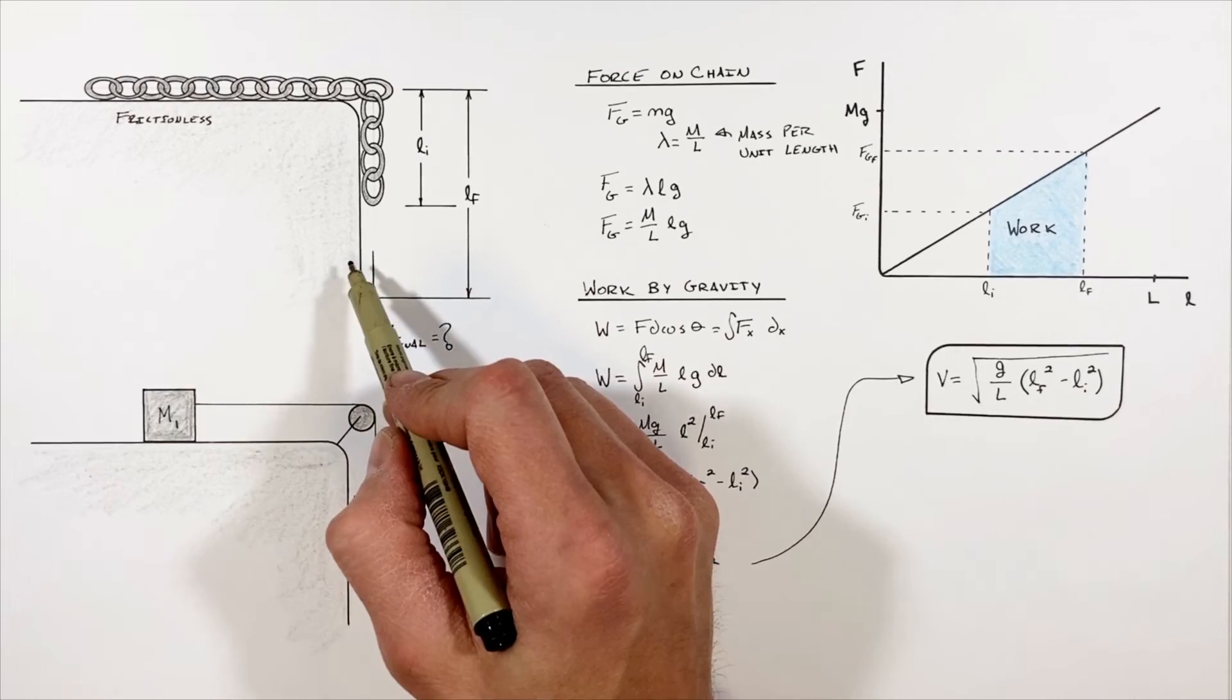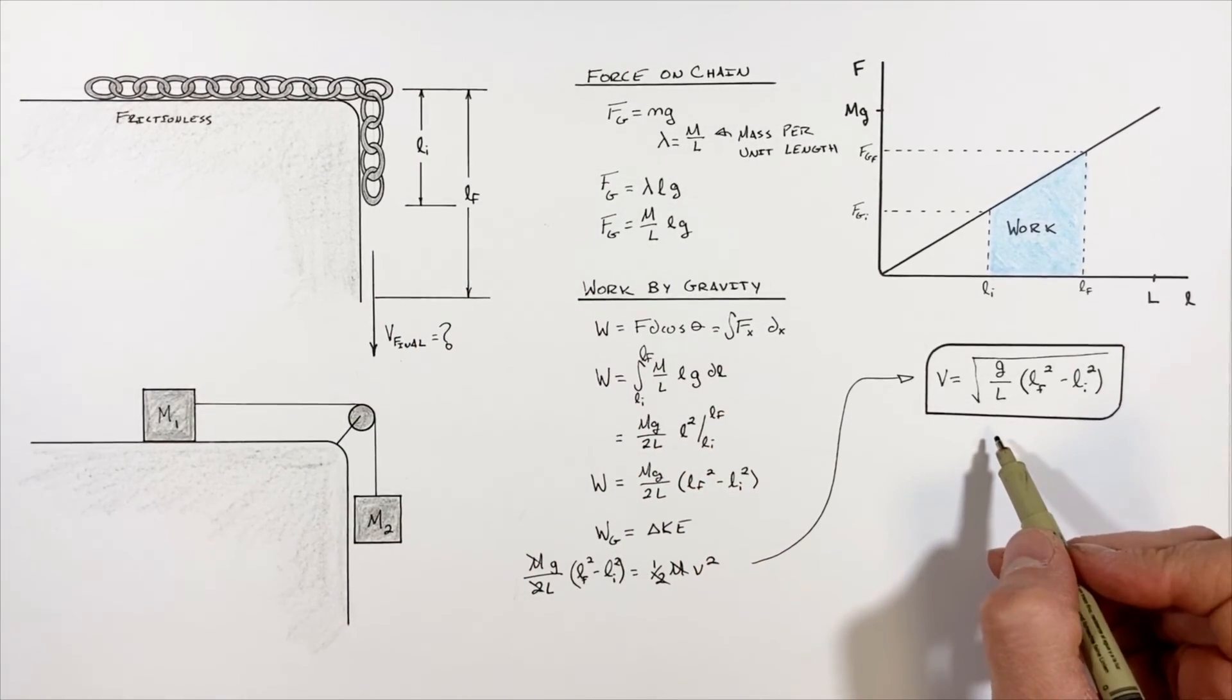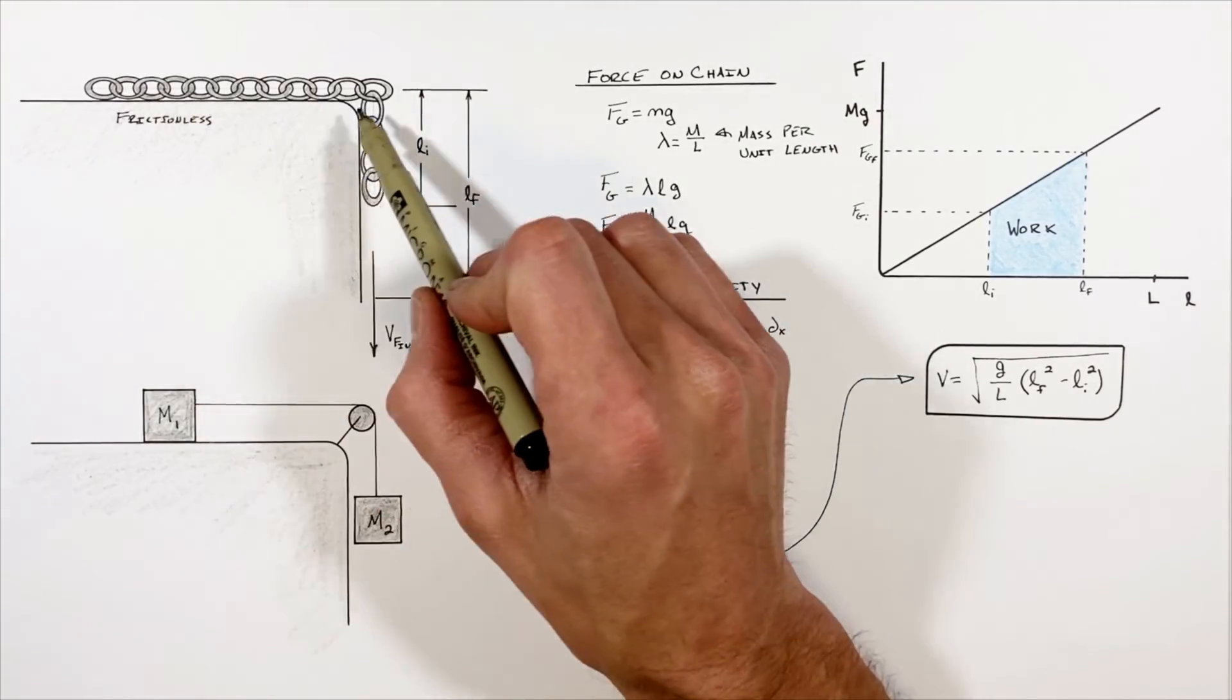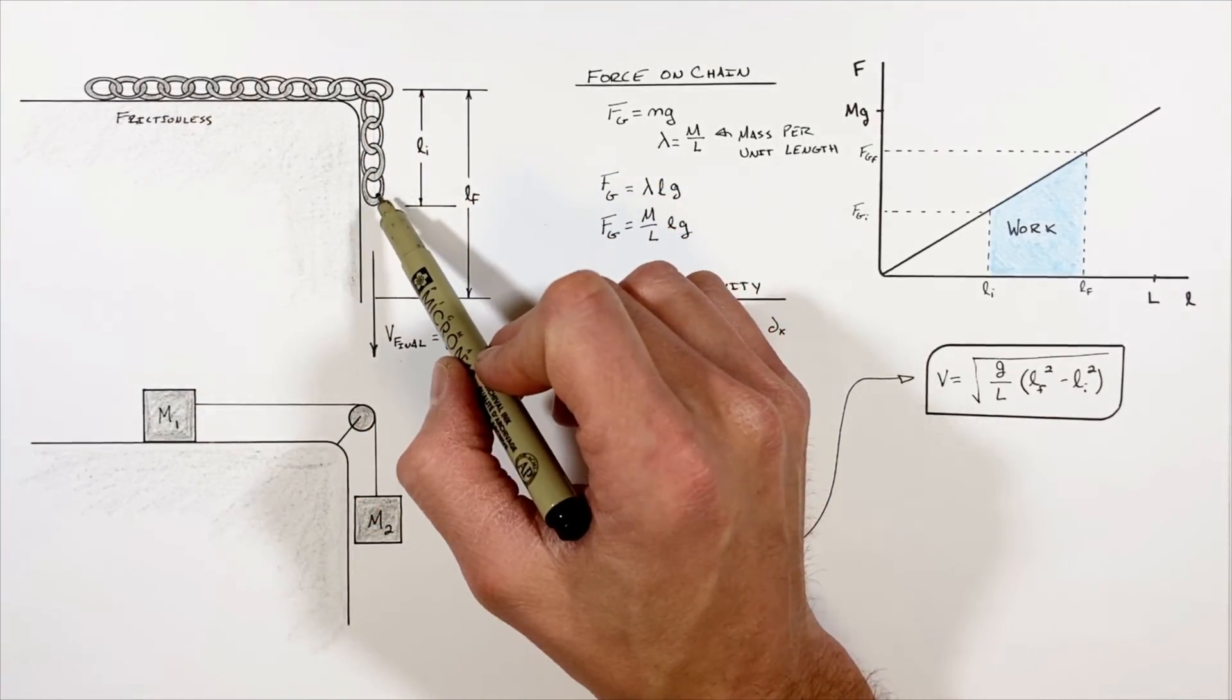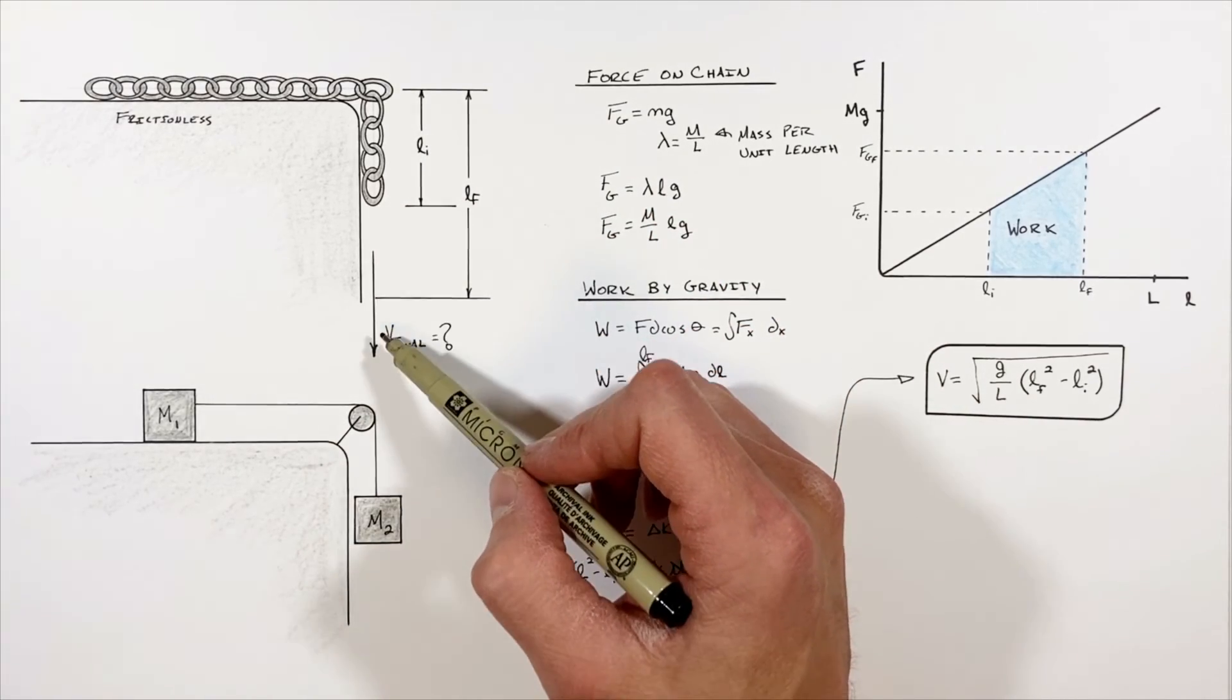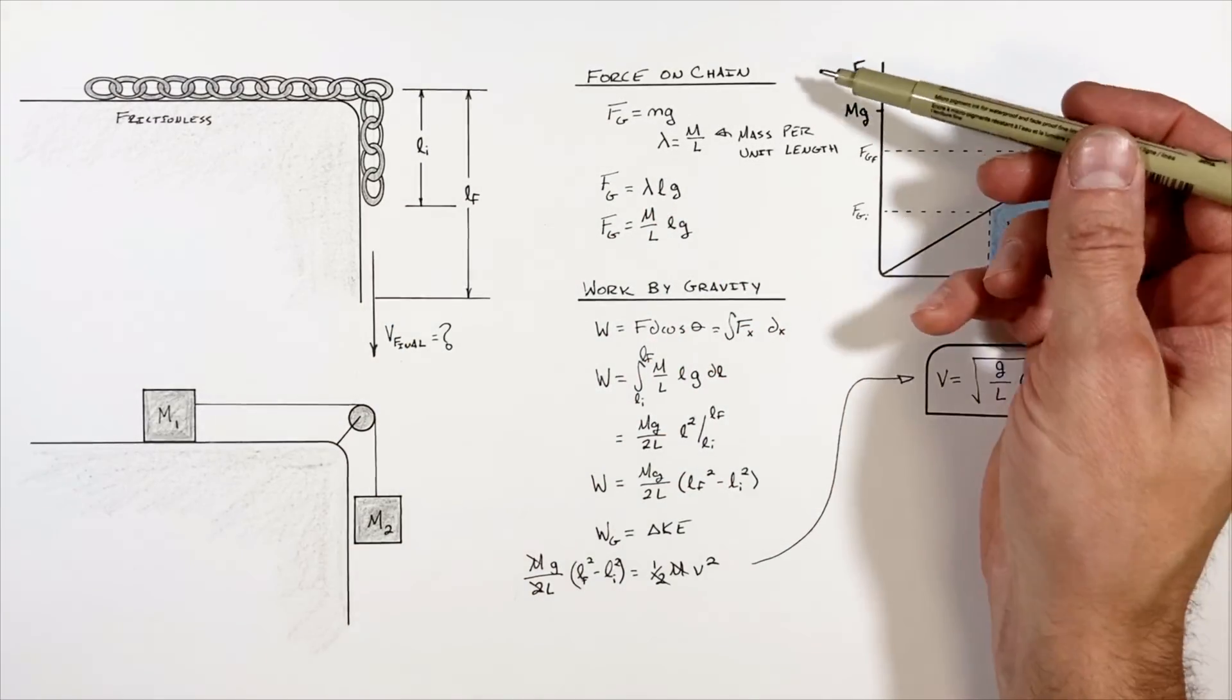Now one thing to point out is that the mass of the chain canceled out here. So that means regardless of how heavy or dense this chain is, that's not really going to affect how fast it's going after it's moved down a certain distance.